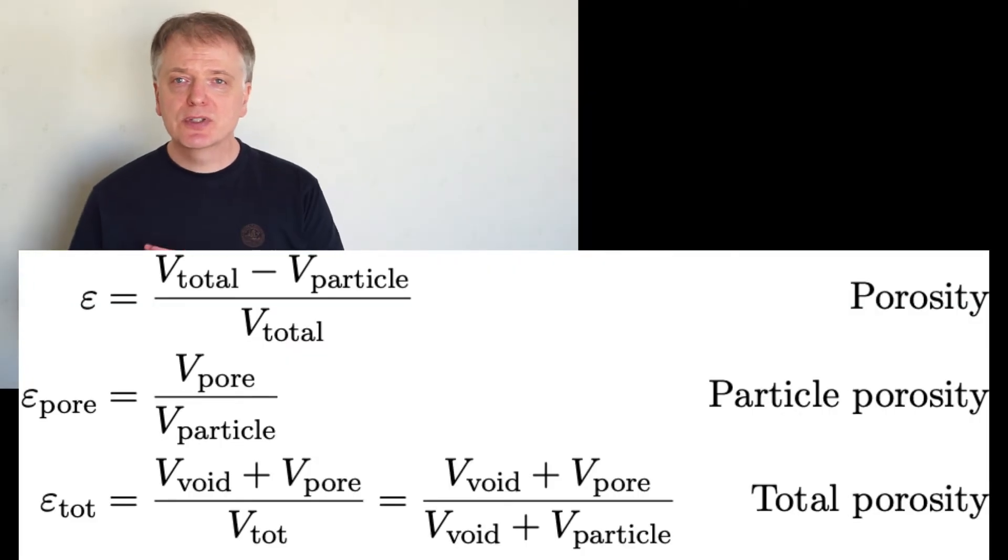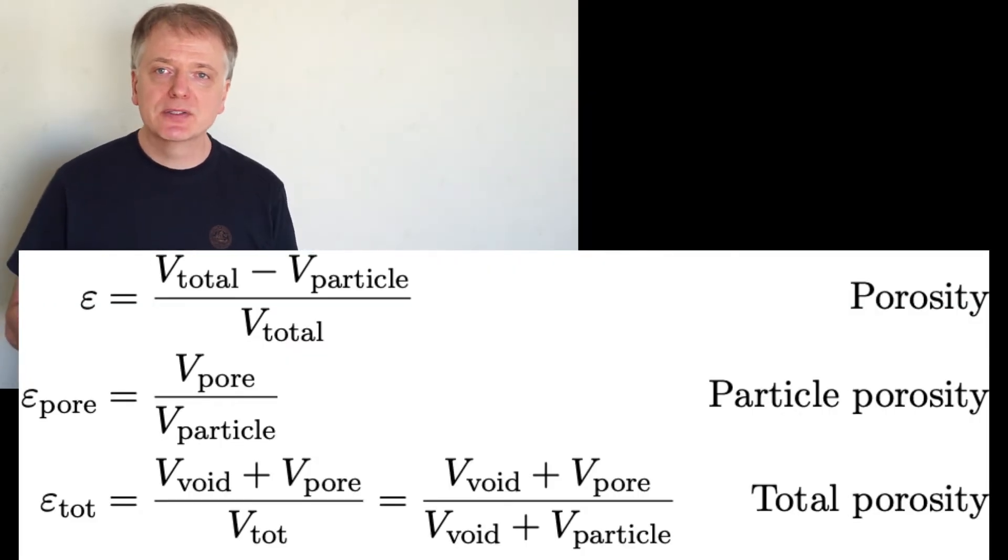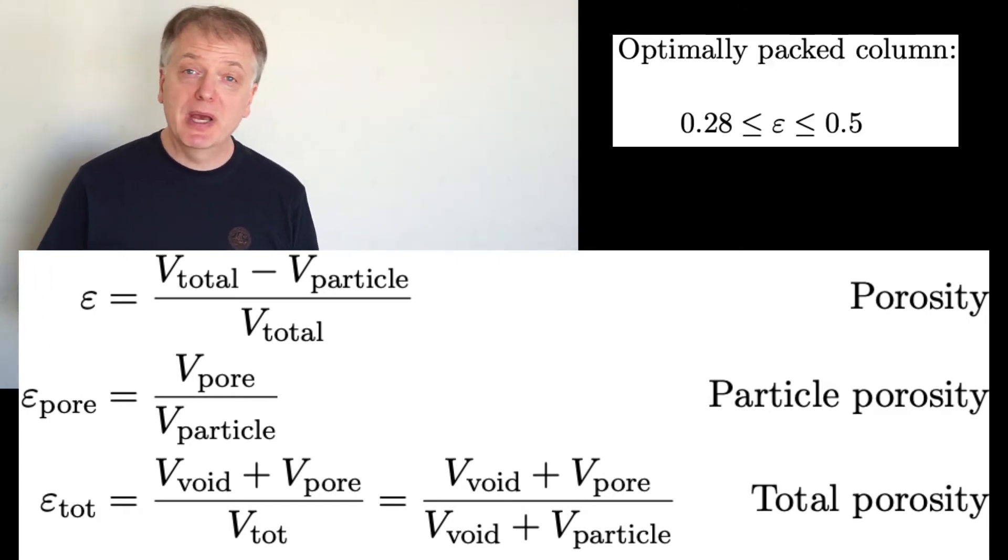So the porosity is the total volume minus the volume of the particles divided by the total volume, in other words the void fraction. In an optimally packed column, the volume typically has a porosity between 0.28 and 0.5.